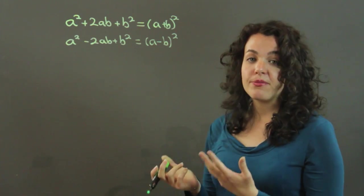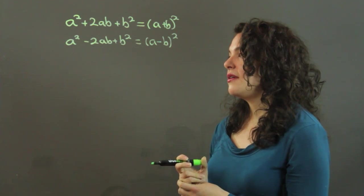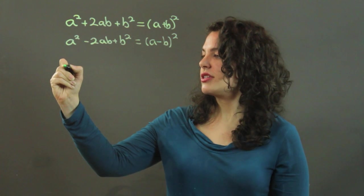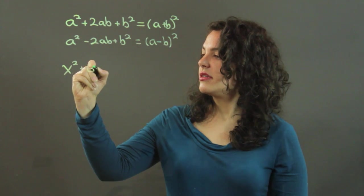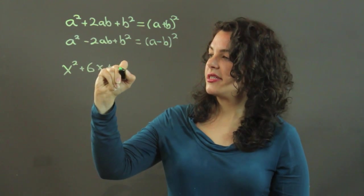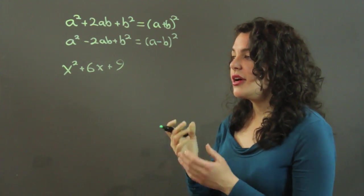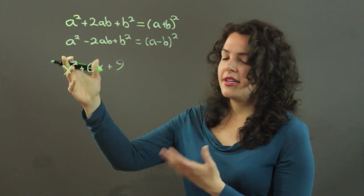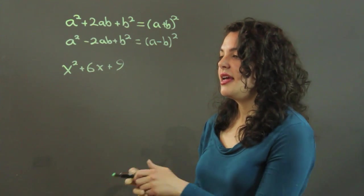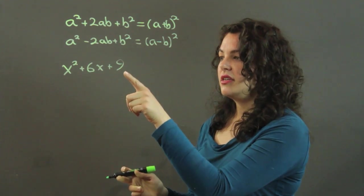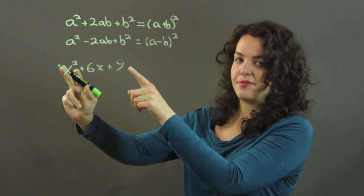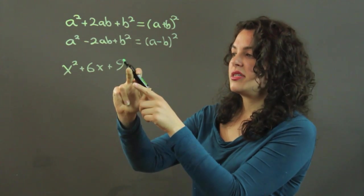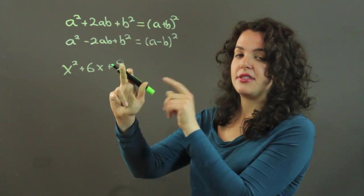Let's do an example of the first one. If I had something like x squared plus 6x plus 9. Now I look at this, and I see that x squared is a perfect square, as is 9. So this serves as my a squared, and this is a b squared. So if this is a b squared, that means my b is 3.